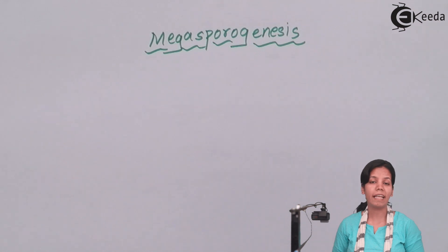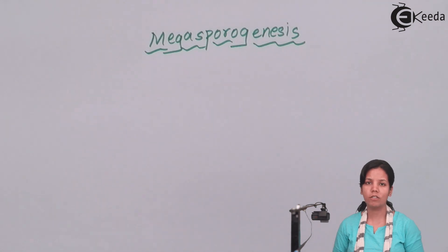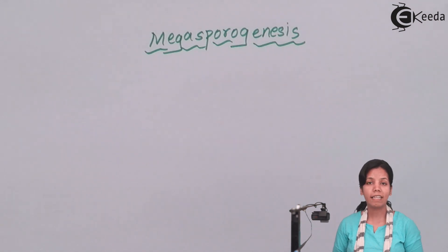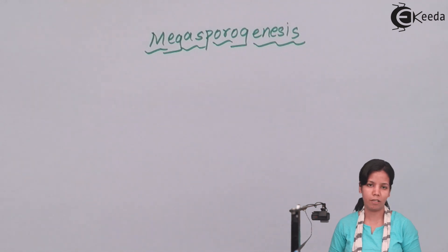One of these megaspores from the tetrad will form the egg cell. The female gametophyte consists of the egg cell containing antipodal cells, synergids, and the embryo sac.